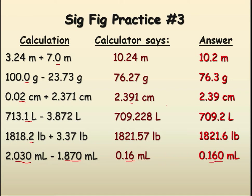That wraps up the concept of significant figures. On all calculations you'll be doing for the next two or three weeks, any time you punch numbers into a calculator, the very last thing you should ask yourself is: to how many significant digits should I report my final answer? The answer depends on the operation used — multiplication and division means counting the number of sig figs; addition and subtraction means looking for which number has the least digits past the decimal. Stay happy, stay healthy, stay safe — sig figs really do matter.